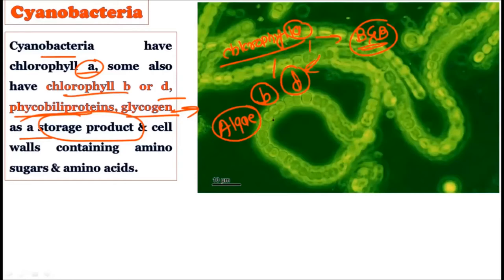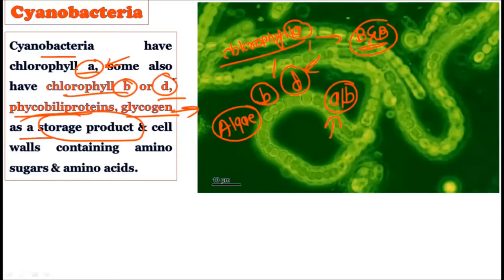In algae we have different types of pigments. The predominant pigments are chlorophyll A and chlorophyll B, which are responsible for the green color in green algae and for photosynthesis. In a very similar way, cyanobacteria also contain chlorophyll A and sometimes chlorophyll B and D, making them more closely related to eukaryotic algae in this respect.